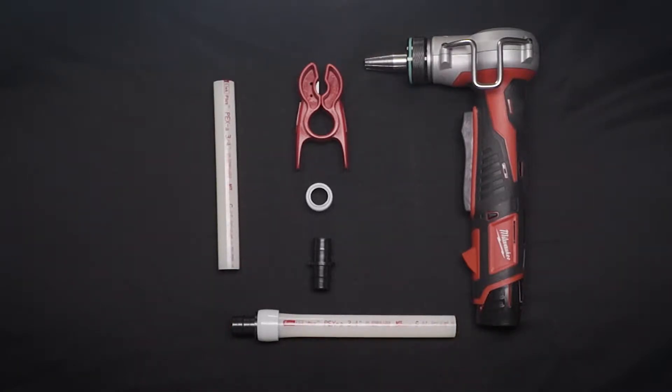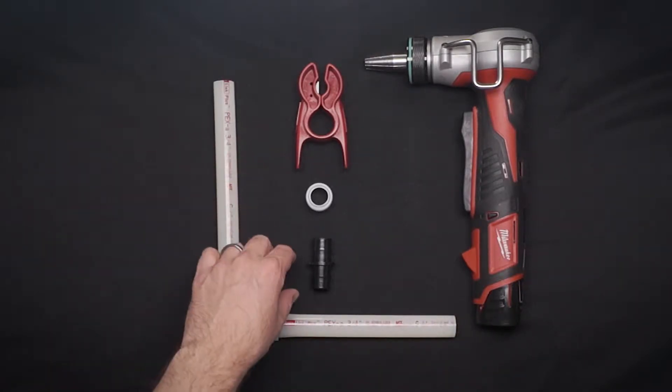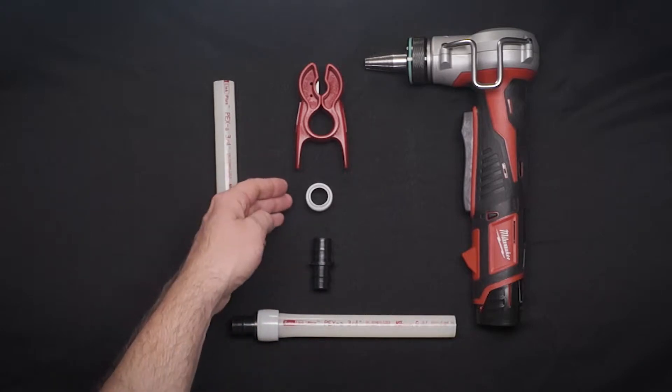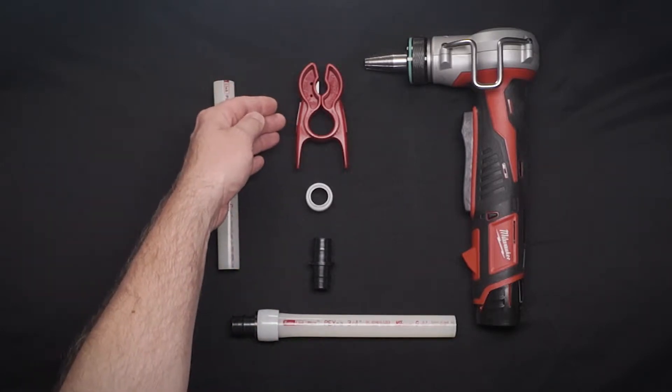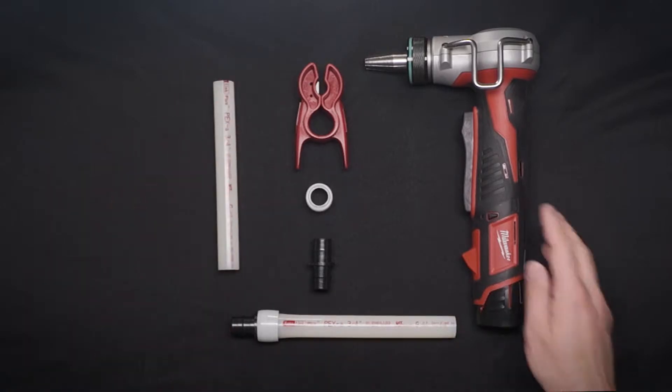Here are the materials we will need: Heatlink PEXA tubing, F1960 fitting, PEXA expansion ring, PEX cutter, and a Heatlink approved expansion tool.